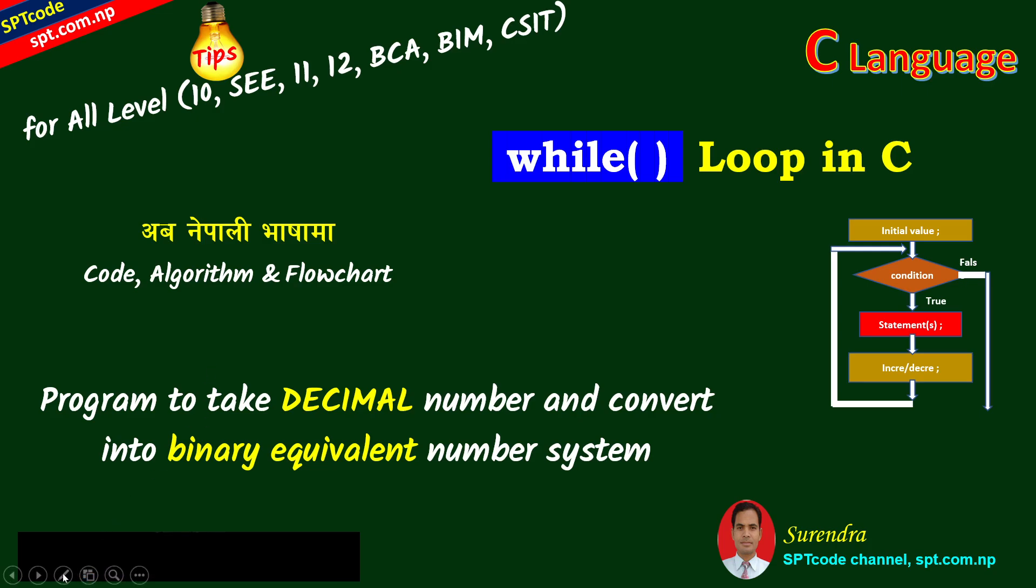I will give you an example of how to use a computer language for decimal numbers. Normally, we use decimal numbers in day-to-day life. Decimal numbers are 0 to 9, which is 10 digits.